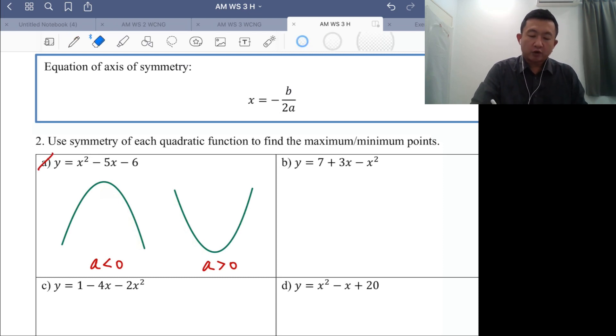By comparing this to the general form of quadratic functions we know that the value of a here is 1, 1x squared. Therefore we will have the shape of a u-shift.